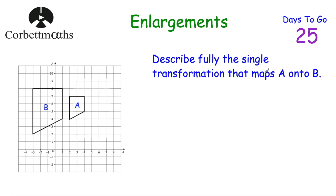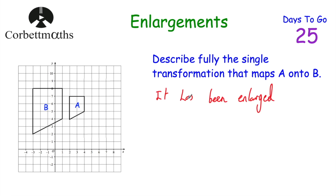Let's look at our next question. We've got two shapes on a grid: trapezium A and trapezium B, where B is bigger than A. We've been asked to describe fully the single transformation that maps A onto B. The first thing to say is that it's been enlarged — there's been an enlargement. To find the scale factor, we look at the sides: the top of A is length 2 and the top of B is length 4, so it's been enlarged by scale factor 2.